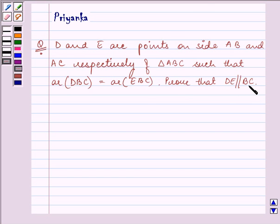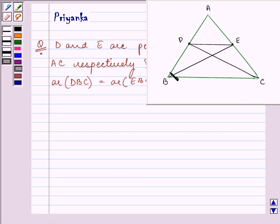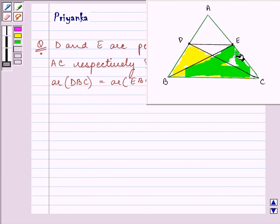Prove that DE is parallel to BC. Now this is the figure that we need to refer. Now here we are given in the question that area of DBC, that is this area, is equal to EBC. That means this area and we can see that this portion is common to both of them.